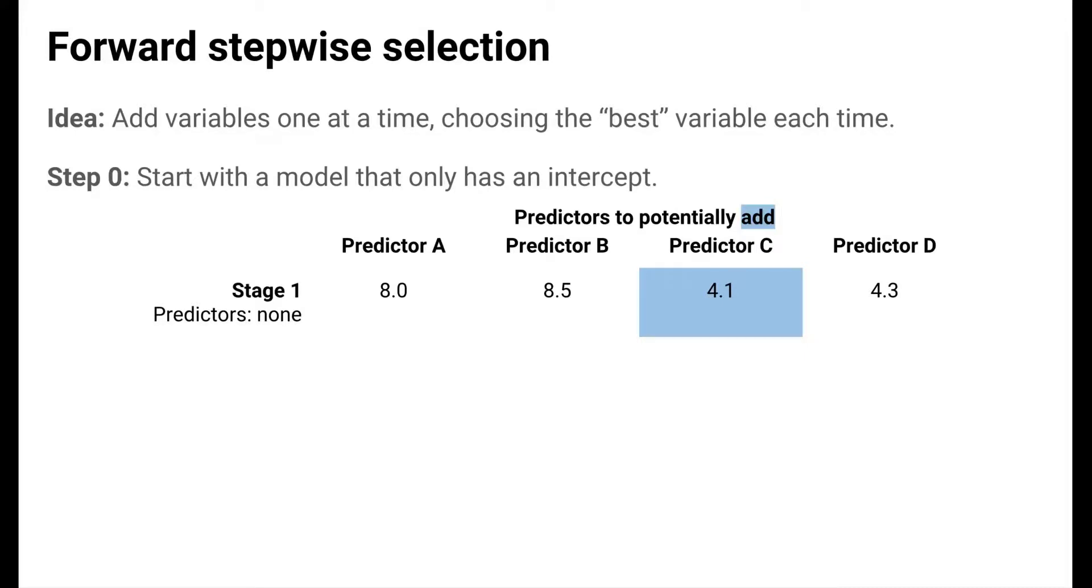In this example, there are just four predictors. So we consider models with just predictor A, just B, just C, and just D. It turns out that adding C results in a model with the lowest cross-validated mean squared error. So we add it to the model.